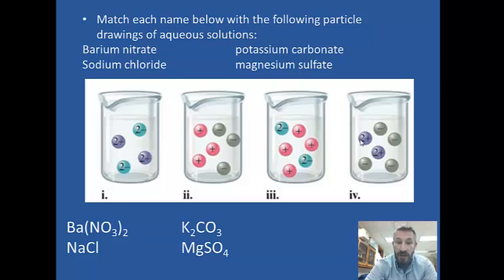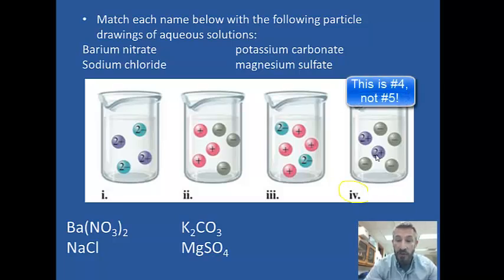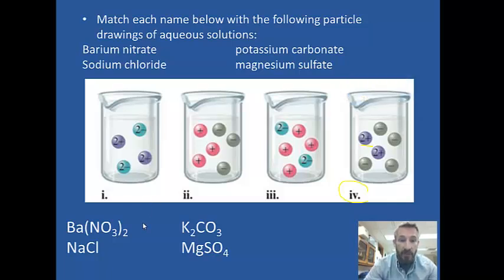We have barium nitrate, potassium carbonate, sodium chloride, and magnesium sulfate. You can stop here and match them, then check your answers. For barium nitrate: barium is 2+ and nitrate is 1−, so they're in a 1-to-2 ratio. The 2+ represents the barium, and the negative-1 spheres — there are twice as many — represent nitrate. The answer for barium nitrate would be number 4.